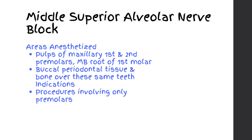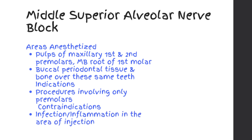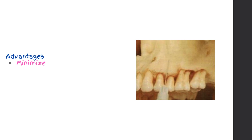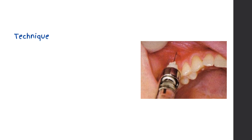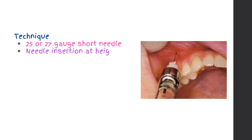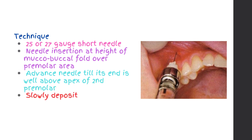Indications: procedures involving only premolars. Contraindications: infection or inflammation in the area of injection. Advantages: minimizes number of injections and volume of solution. Disadvantages: none. Technique: 25 or 27 gauge short needle. Needle insertion at height of muco-buccal fold over premolar area. Advance needle until its end is well above the apex of the second premolar. Slowly deposit 0.9 to 1.2 milliliters of solution.